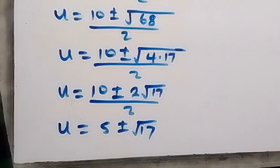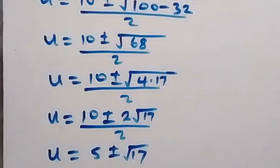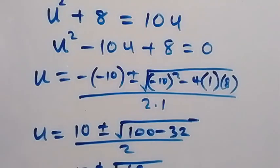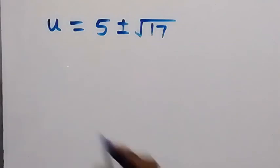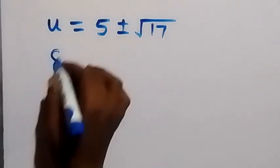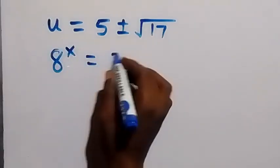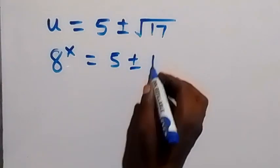Now from here we represented u as 8 raised to power x. So we can see that 8 raised to power x now is equals to 5 plus or minus square root of 17.